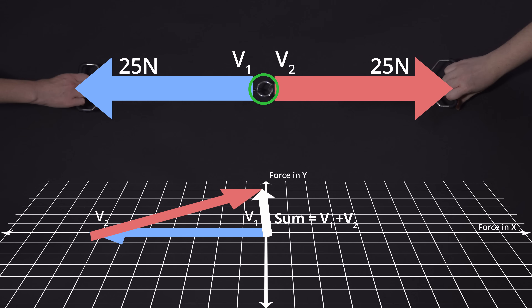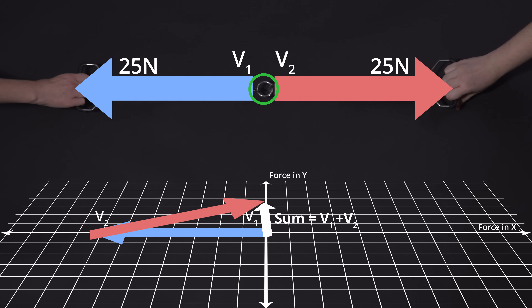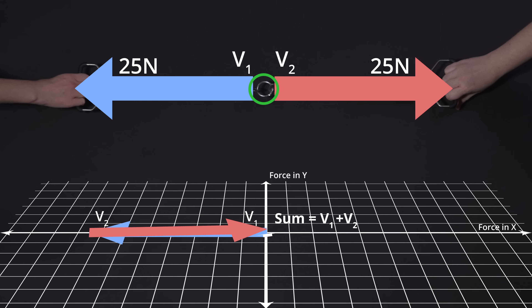If these two arrows did not overlay each other, it would be easier to see their sum. However, in this case, the second arrow exactly overlies the first and ends where the first one began, meaning that the sum of the two vectors is exactly zero.